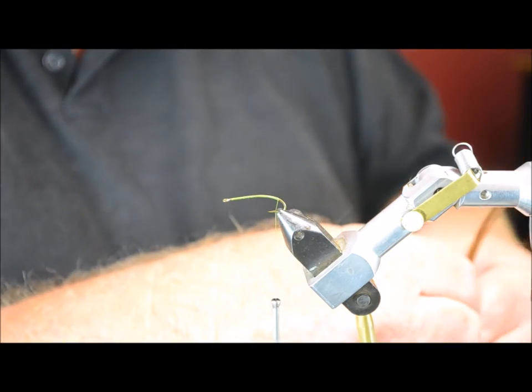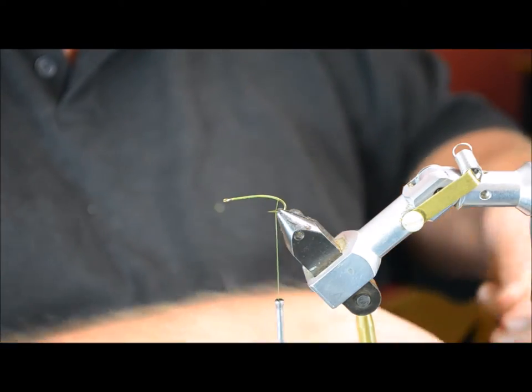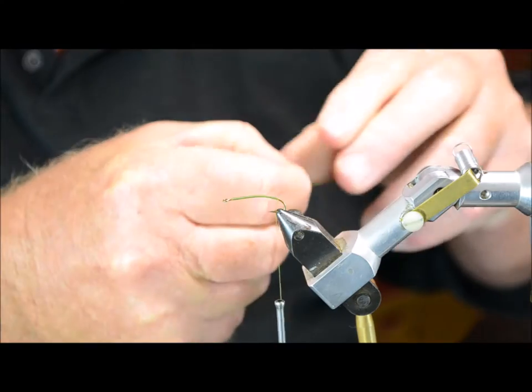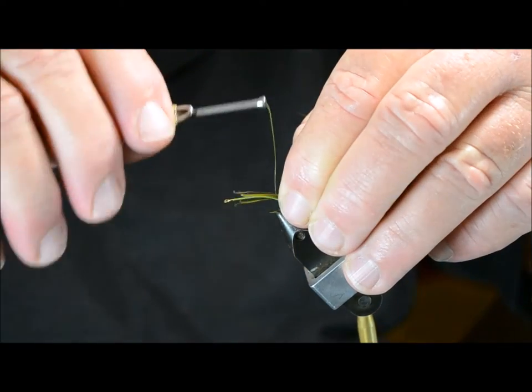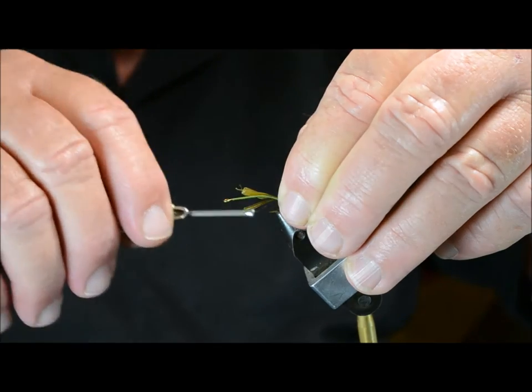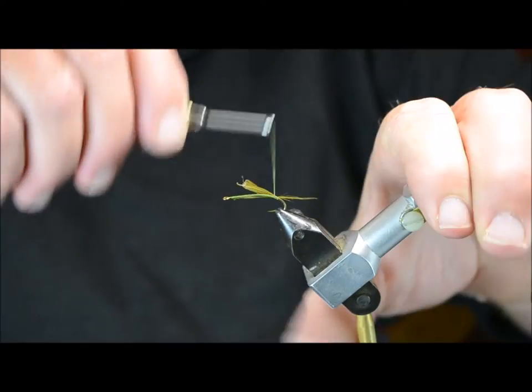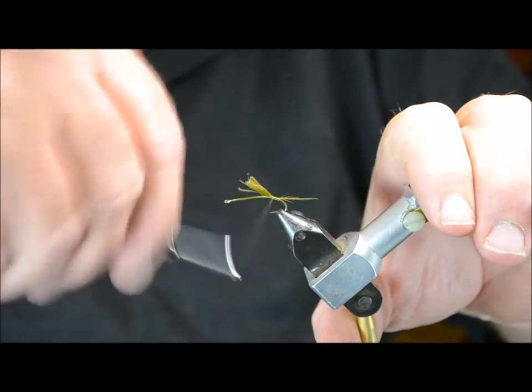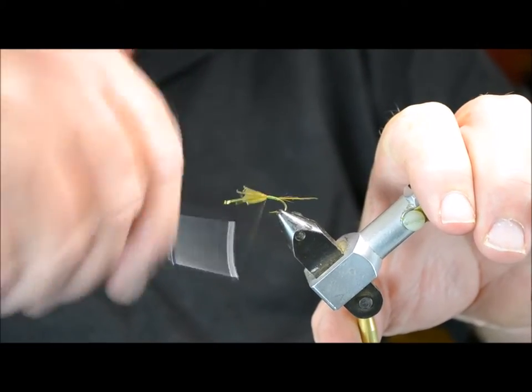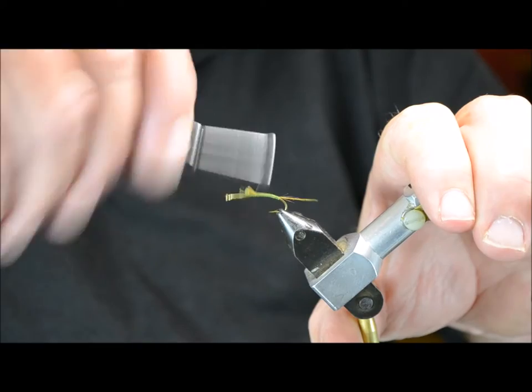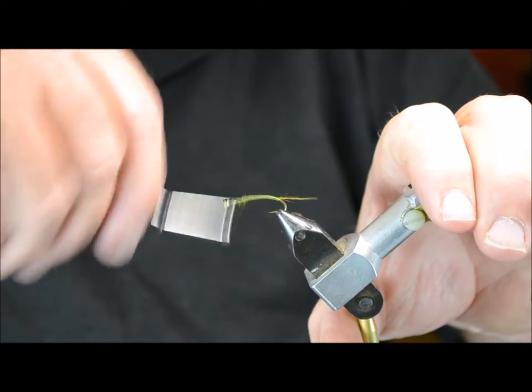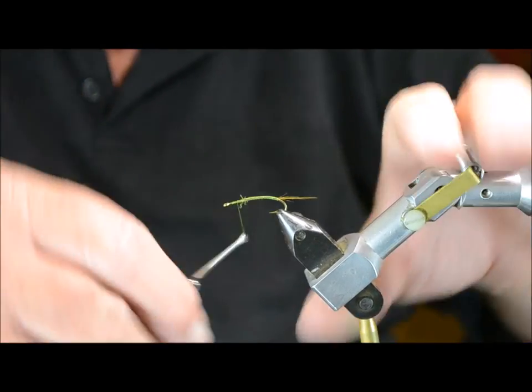For the tail, we're just using a few pieces of hackle. Very slim, this fly is a very slim fly. That's what it needs. Run that forward.